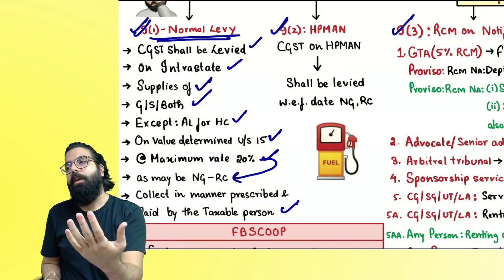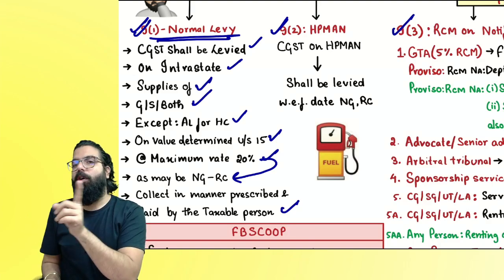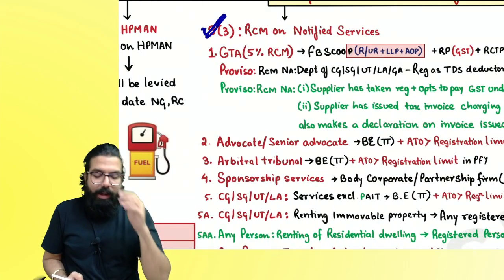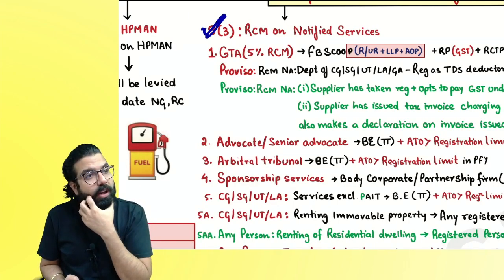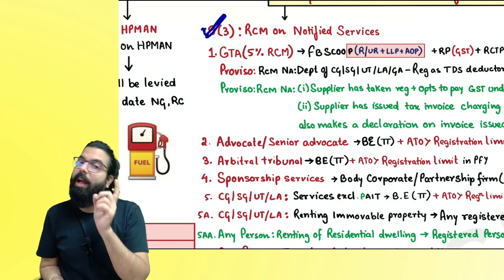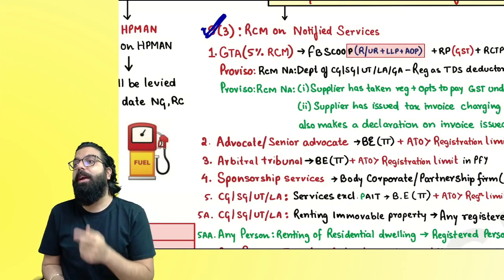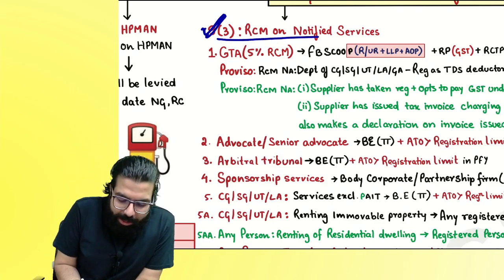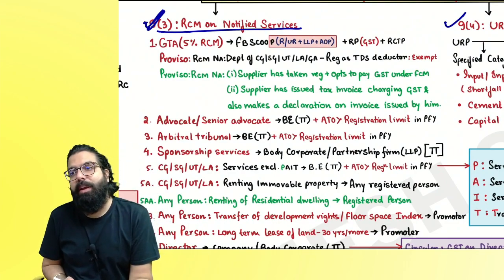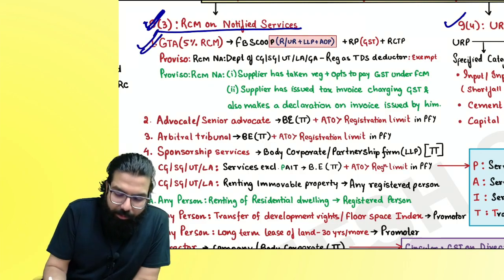Section 9(3) talks about services on which GST is applicable under the Reverse Charge Mechanism (RCM). Goods and services both are there, but goods are not part of our syllabus — only services are. So we are going to learn about the various services on which RCM is applicable.